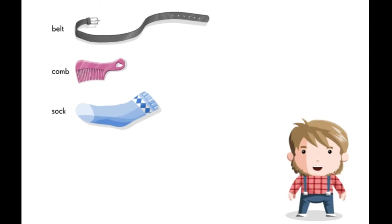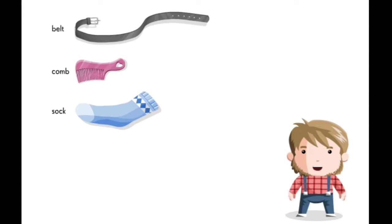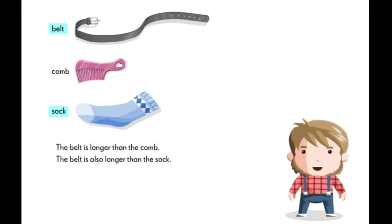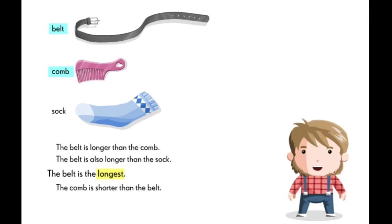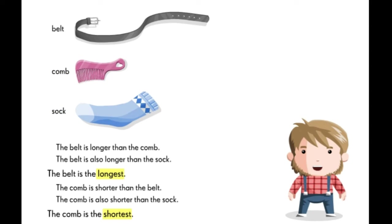Let's compare the length of these items. Which is the longest? The belt is longer than the comb. The belt is also longer than the shrub. So the belt is the longest. Which is the shortest? The comb is shorter than the belt. The comb is also shorter than the shrub. So the comb is the shortest.